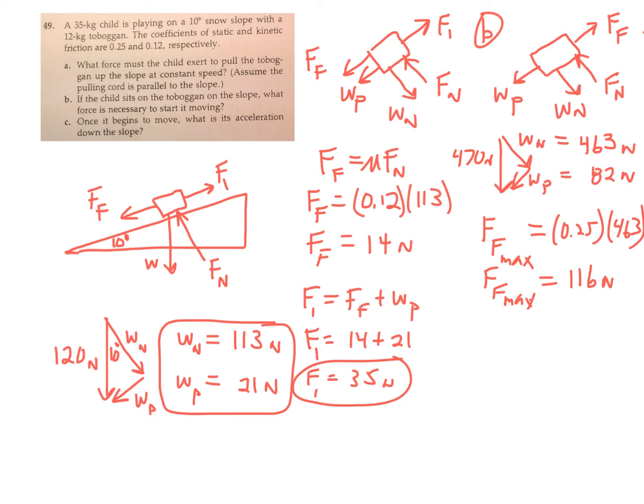So to get the sled to go, we need to get up to 116 newtons down the hill. So we need an additional push. All we have to do is subtract. We take the 116 minus the 82, which is 34 newtons. We need a 34 newton or more push to get the sled to go down the hill.